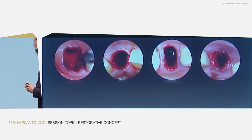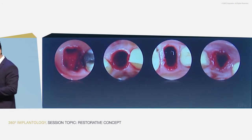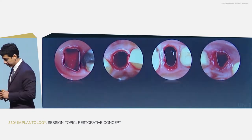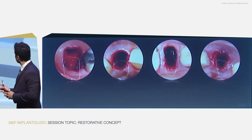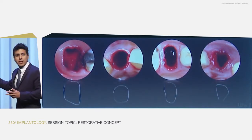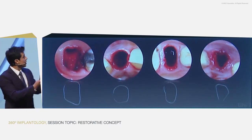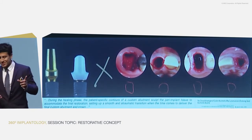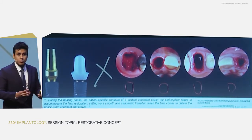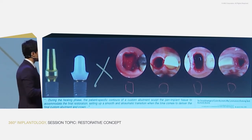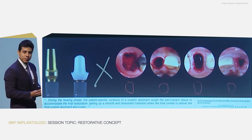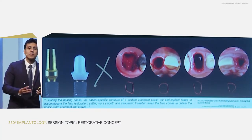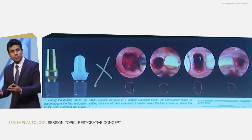Pay attention to four situations. Each one has a specific shape, as Professor Marinello mentioned. If we want to deliver a natural restoration for the patient, we have to follow this kind of shape. If we work with prefabricated abutments, it will be difficult to deliver acceptable restorations, and we may spend many appointments managing the tissue, which can traumatize the soft tissue.